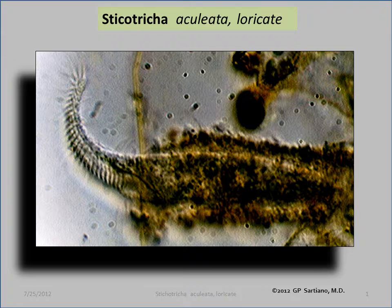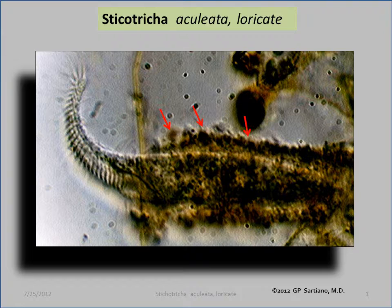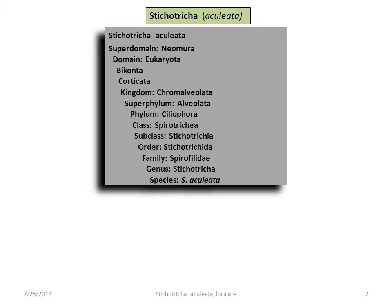Stichotrica are commonly housed in a granular lorica, a mucous sheath of their own making. The lorica often contains debris and bits of dirt, and according to Joan Frude, even particles of Stichotrica's own solid waste. Stichotrica resides in its own genus.